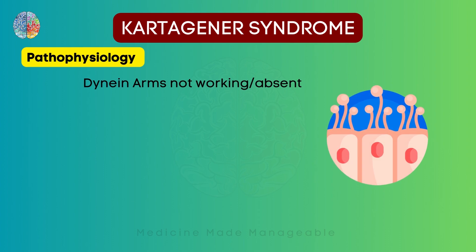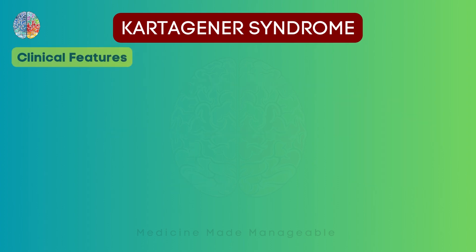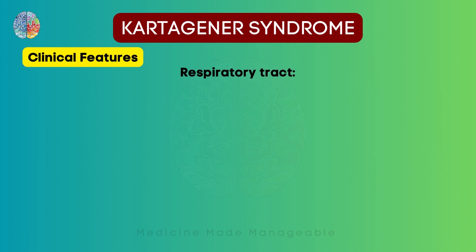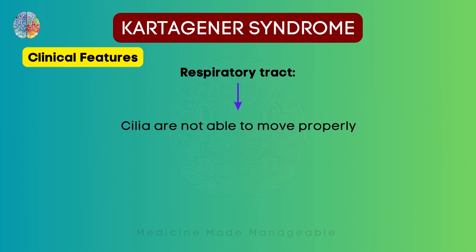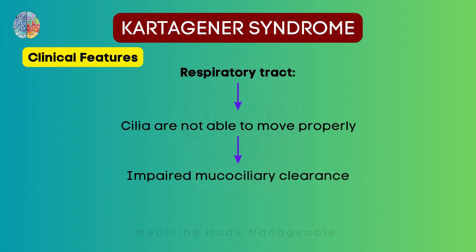So due to this mutation, if the dynein arms are not working or are absent, the cilia will not be able to move properly and hence will lead to all the symptoms. As you know, the respiratory tract is lined by cilia, which are responsible for keeping the respiratory tract free of pathogens and other particles. But in this disease, the cilia are not able to move properly — in other words, there is impaired mucociliary clearance, and this is going to lead to a lot of complications.